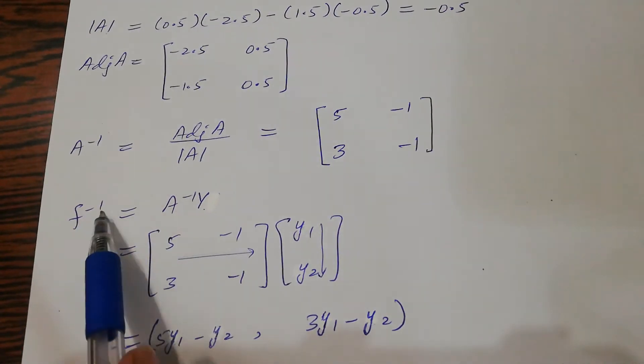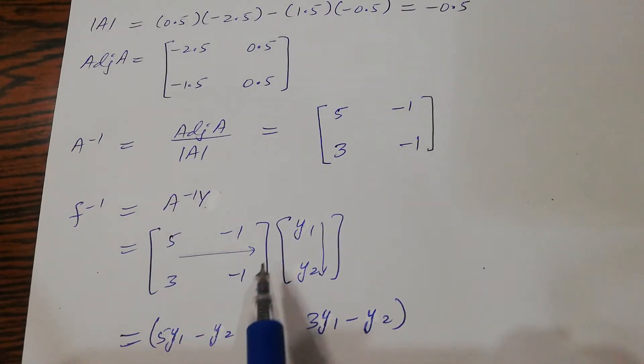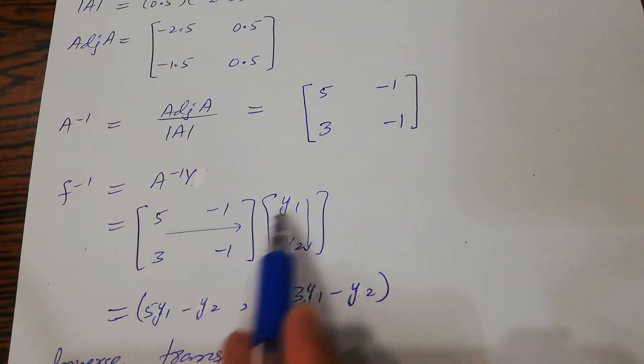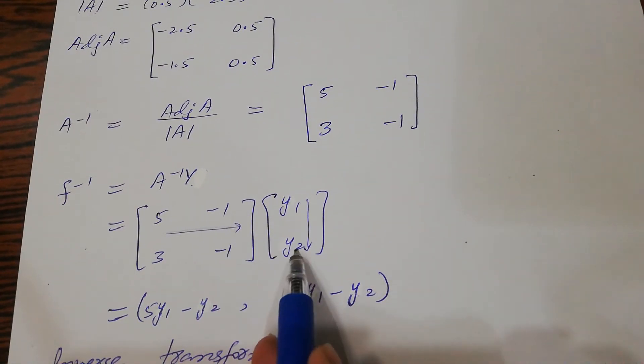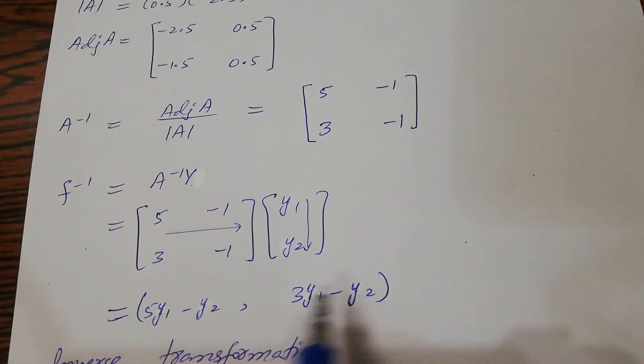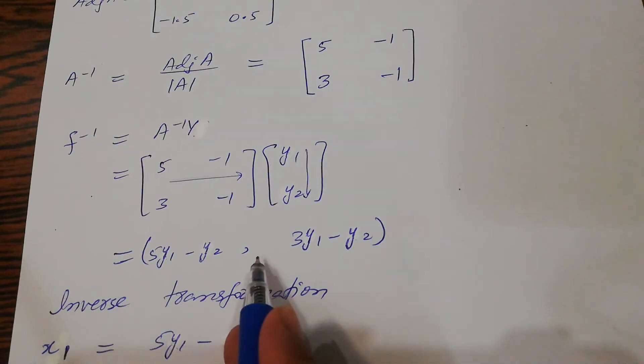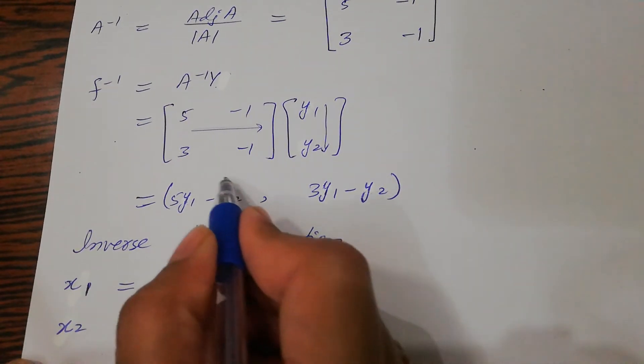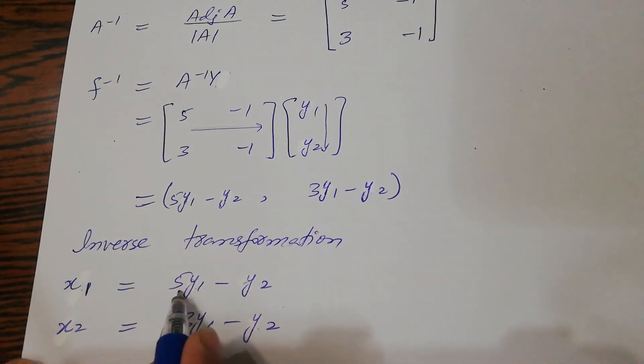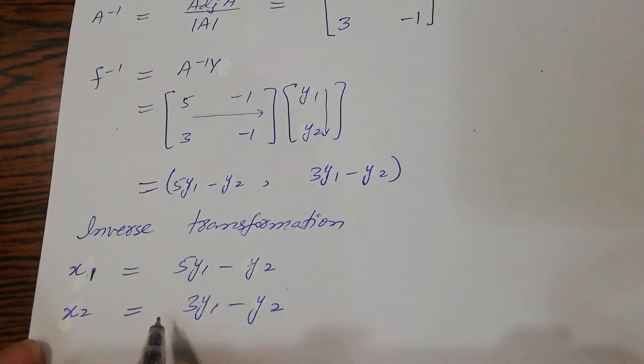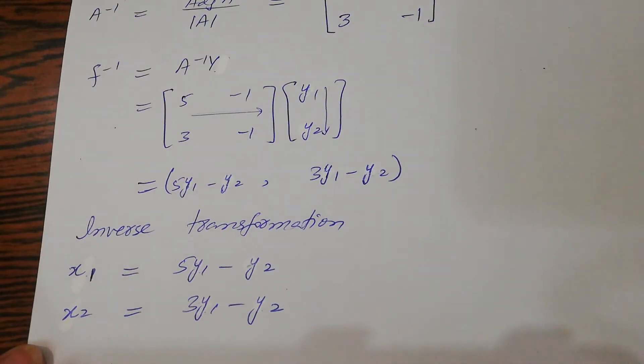F inverse is A inverse times Y. Multiplying them: 5 times y1 minus 1 times y2, 3 times y1 minus 1 times y2. So x1 equals 5y1 minus y2, and x2 equals 3y1 minus y2. This is the inverse transformation.